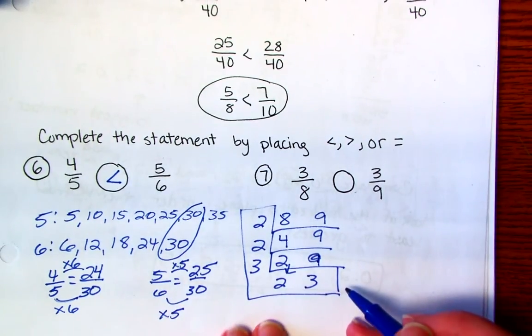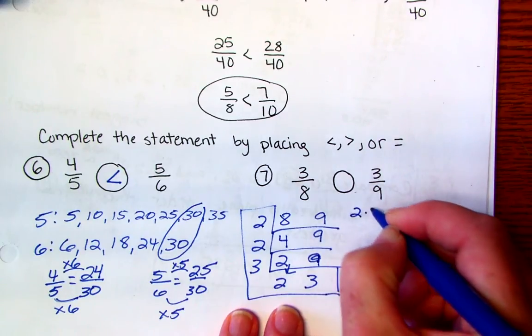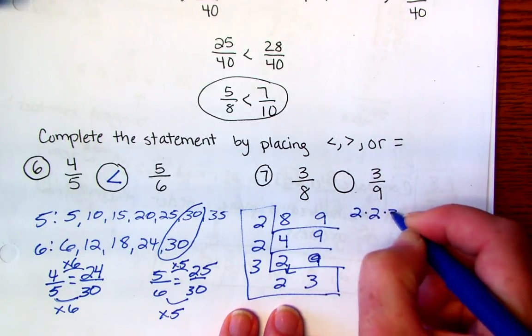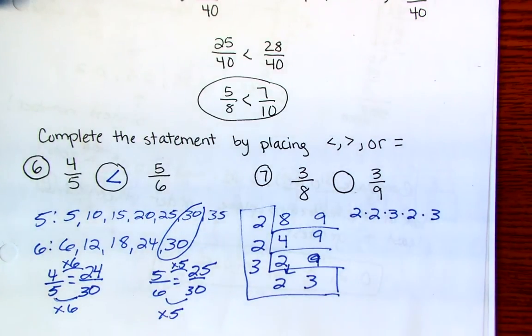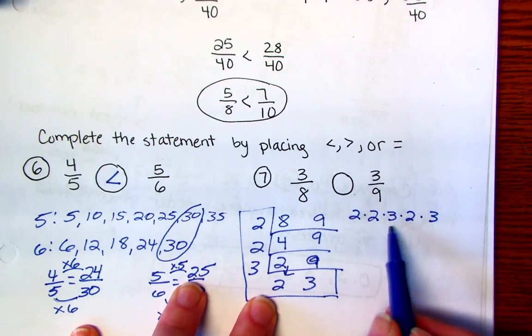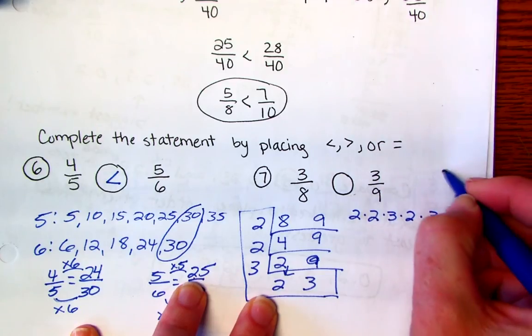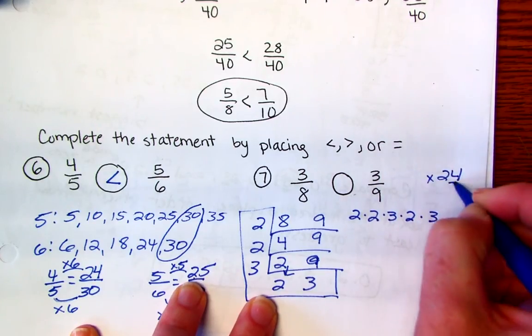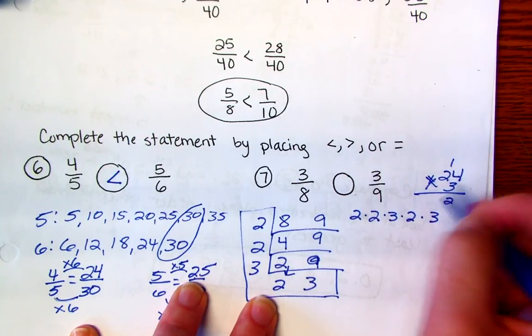So I'm done here with finding my least common multiple. And we call it a least common denominator when we're dealing with the fractions. So I'm going to go ahead and write out 2 times 2 times 3 times 2 times 3. So if I look at that, 2 times 2 is 4. 4 times 3 is 12. 12 times 2 is 24. And then 24 times 3. I'm going to do that old school over here. 24 times 3. 3 times 4 is 12. 72.